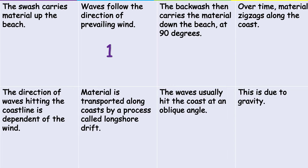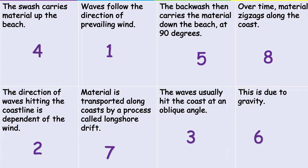Once you've done that, here are the quick answers. One: waves follow the direction of prevailing wind. Two: the direction of waves hitting the coastline depends on the wind. Three: waves usually hit the coast at an oblique angle. Four: the swash carries material up the beach. Five: the backwash carries material back down at 90 degrees. Six: this is due to gravity. Seven: material is transported along coasts by longshore drift. Eight: over time, material zigzags along the coast.